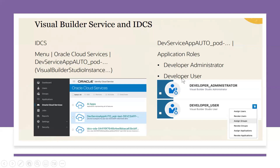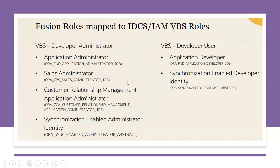There are two ways to enable Visual Builder access. Either in IDCS you add your user to Developer Administrator or Developer User roles directly. The other way is from the Fusion side — you can add roles such as Application Administrator, Sales Administrator, Custom CRM Application Administrator, or Sync Enabled Administrator Identity. Any one of these four roles will provide this access. Adding from the Fusion side will sync to IDCS and then enable Visual Builder Studio access.